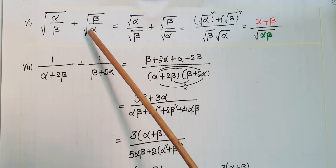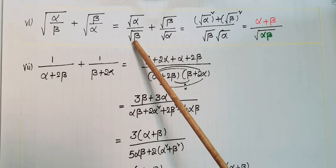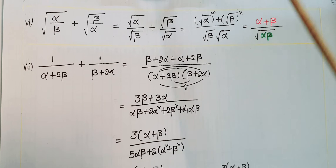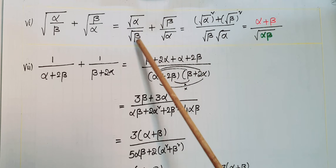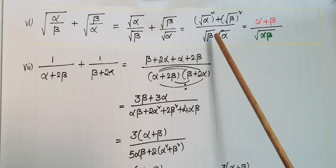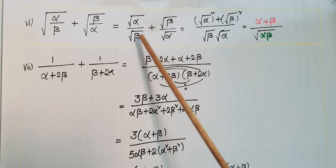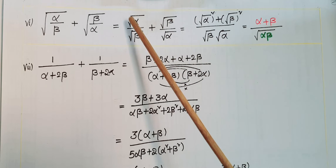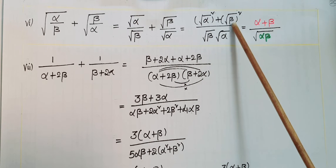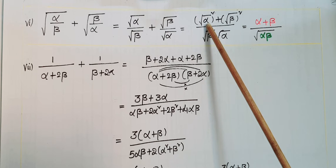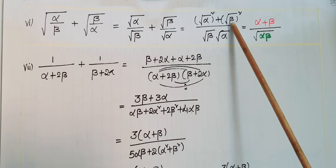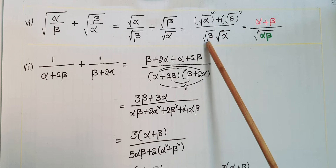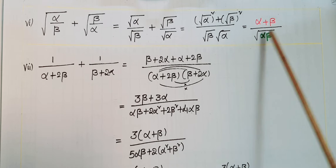Next, √(α/β) plus √(β/α): this equals √α/√β plus √β/√α. Take LCM of √β and √α, which is √α·√β. The numerator becomes √α·√α plus √β·√β, equal to alpha plus beta. The denominator is √α·√β, equal to √(alpha·beta). So the result is (alpha plus beta) divided by √(alpha·beta).